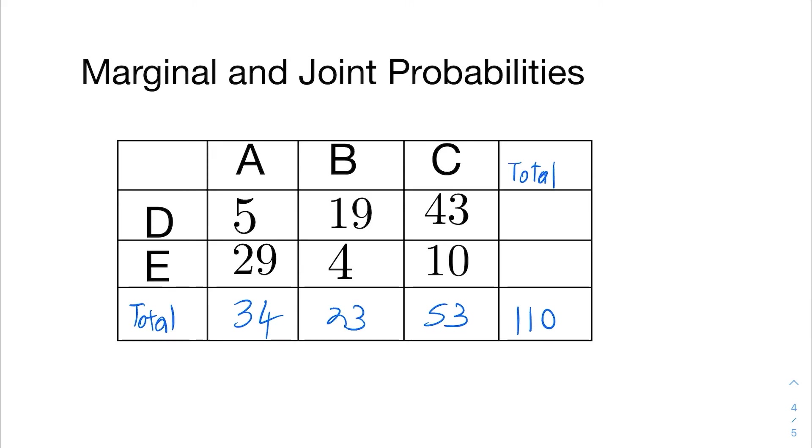And then we can do the same thing for the rows. So for row D, 5 plus 19 plus 43 is 67. And then for row E, 29 plus 4 plus 10, that's 43. And that also adds up to 110.